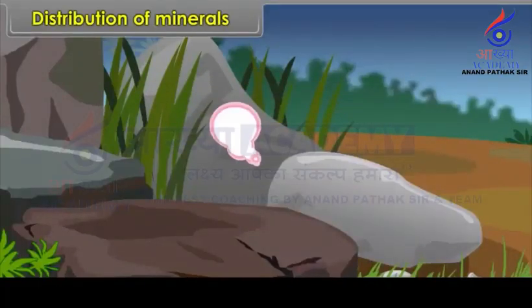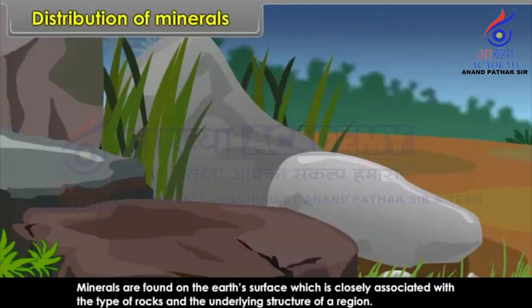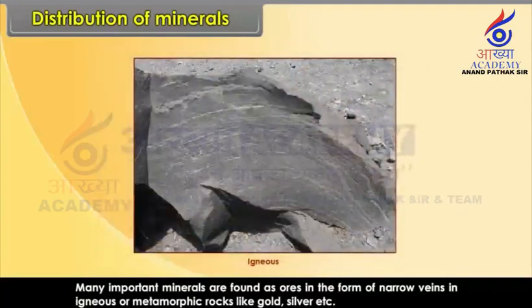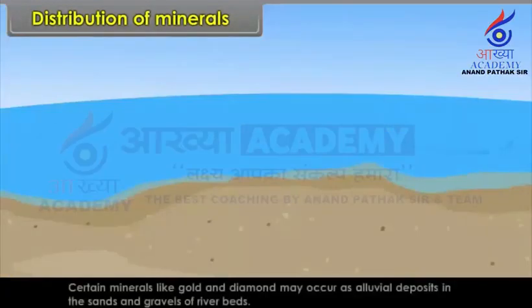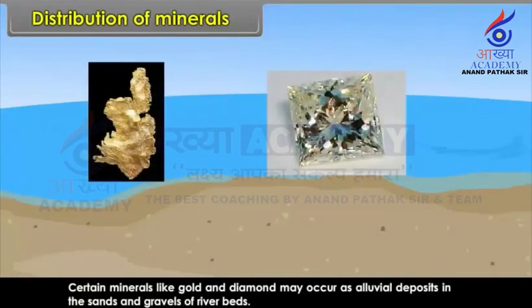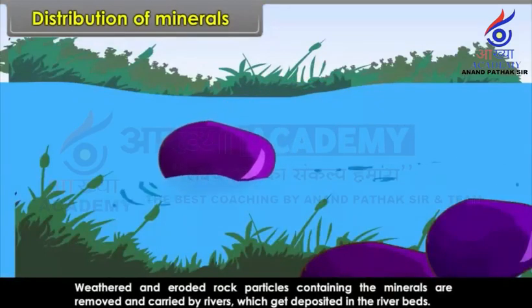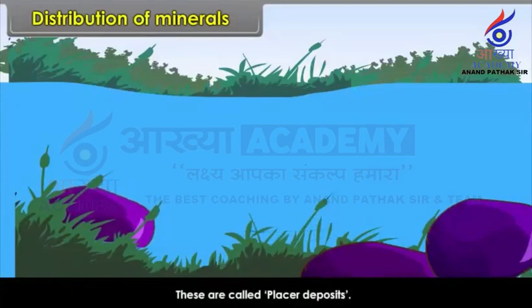Distribution of minerals. Minerals are found on the earth's surface, which is closely associated with the type of rocks and the underlying structure of a region. Many important minerals are found as ores in the form of narrow veins in igneous or metamorphic rocks, like gold, silver, etc. Certain minerals like gold and diamond may occur as alluvial deposits in the sands and gravels of river beds. Weathered and eroded rock particles containing minerals are removed and carried by rivers which get deposited in the river beds — these are called placer deposits.